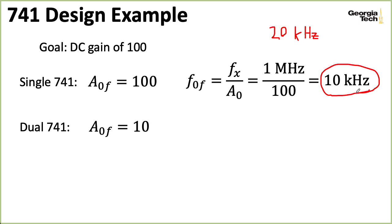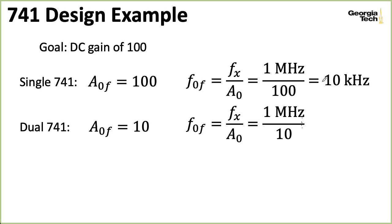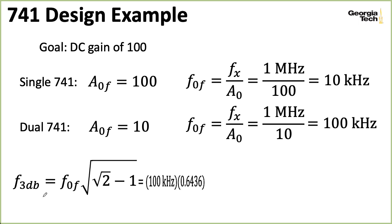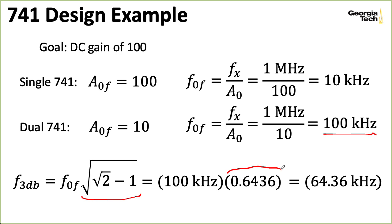Now, if we do the same calculation for the dual 741 case, we wind up with a corner frequency for each individual amplifier stage of 100 kilohertz. Now we can pull out our formula for the cascade and say that our 3 dB bandwidth is going to be 100 kilohertz, which is the bandwidth of one of the stages times this square root of square root of 2 plus 1, which is around 0.6436. So that kind of architecture will give me a bandwidth of 64.36 kilohertz. I guess you could round that to 64 kilohertz. So that's going to cover the audio range and a whole lot more if you wanted.